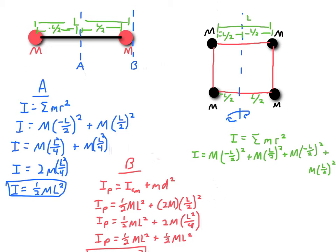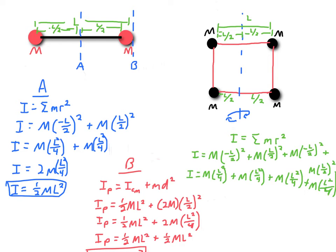With four masses all at distance L over 2 from the axis, I sum up each mass M times (L over 2) squared for all four. Each contributes ML squared over 4, so combining four of them gives 4 times ML squared over 4. The fours cancel, leaving a moment of inertia of ML squared for the entire system rotating around the center axis.